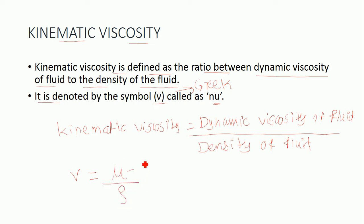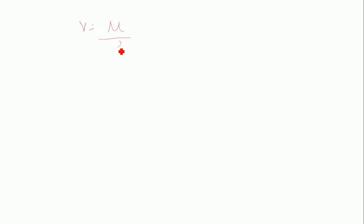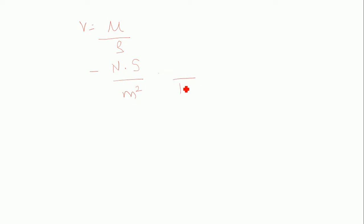Let us derive the unit of kinematic viscosity. Kinematic viscosity is the ratio of dynamic viscosity to the density of the fluid. The unit of dynamic viscosity is Newton second per meter square, and the density unit is Kg per meter square.